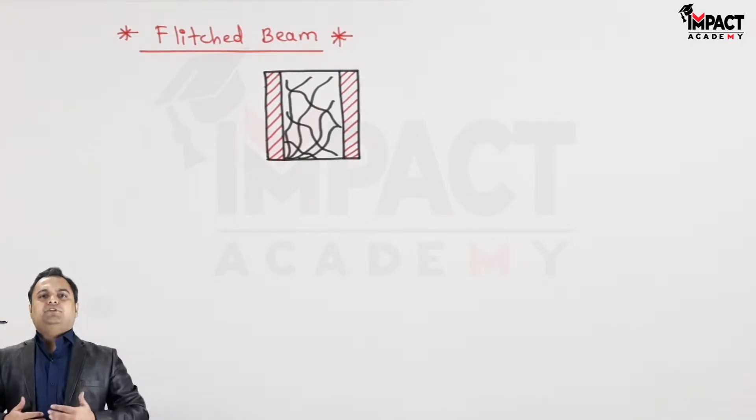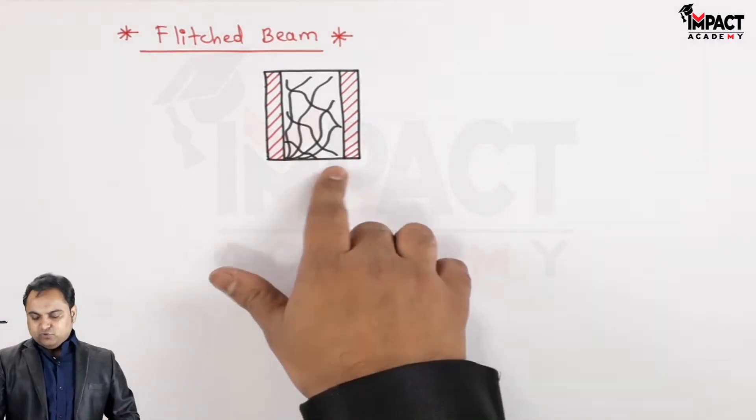flitched beam is basically a composite beam. That is a beam made up of two different materials. Like here in the example which I am showing, there is wood and steel.